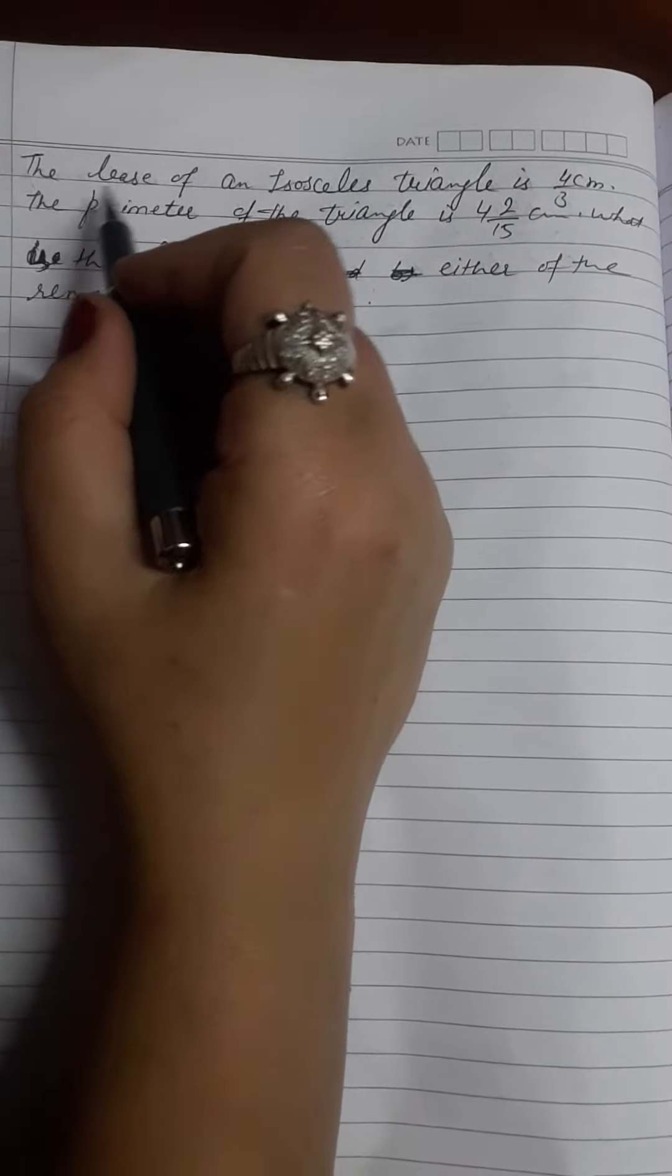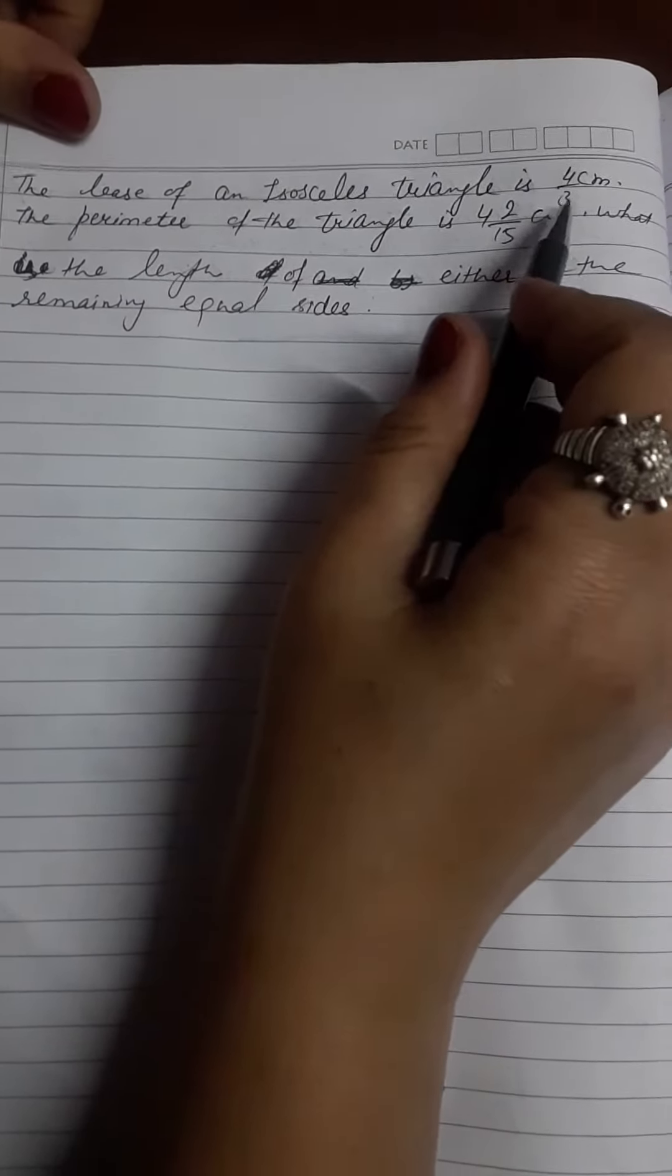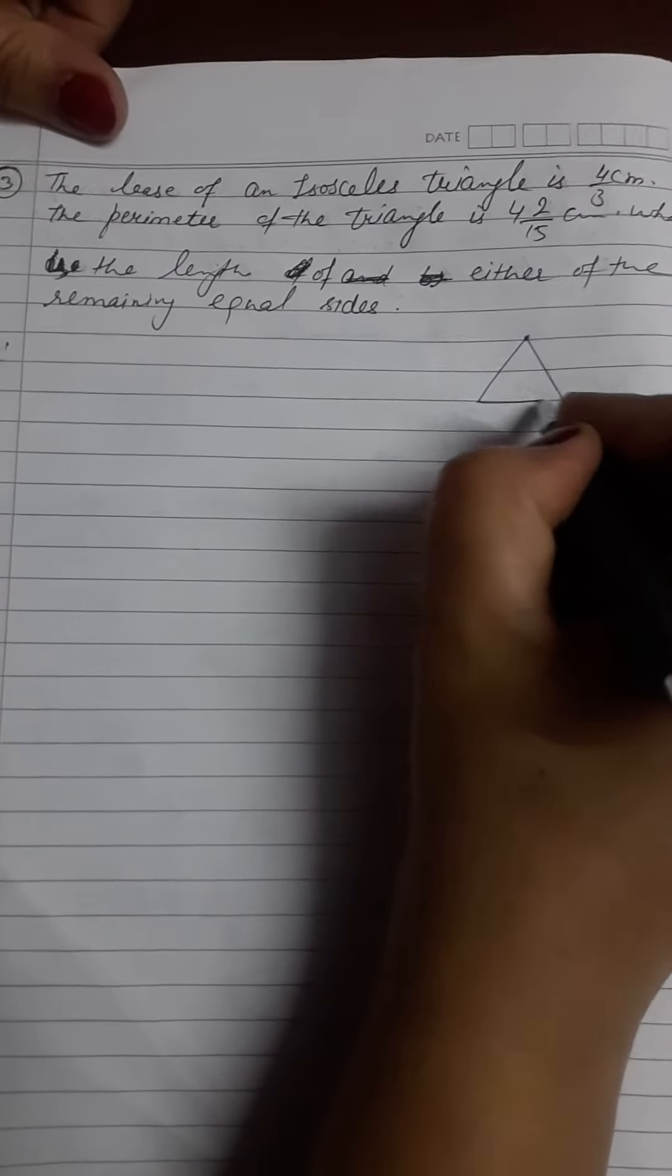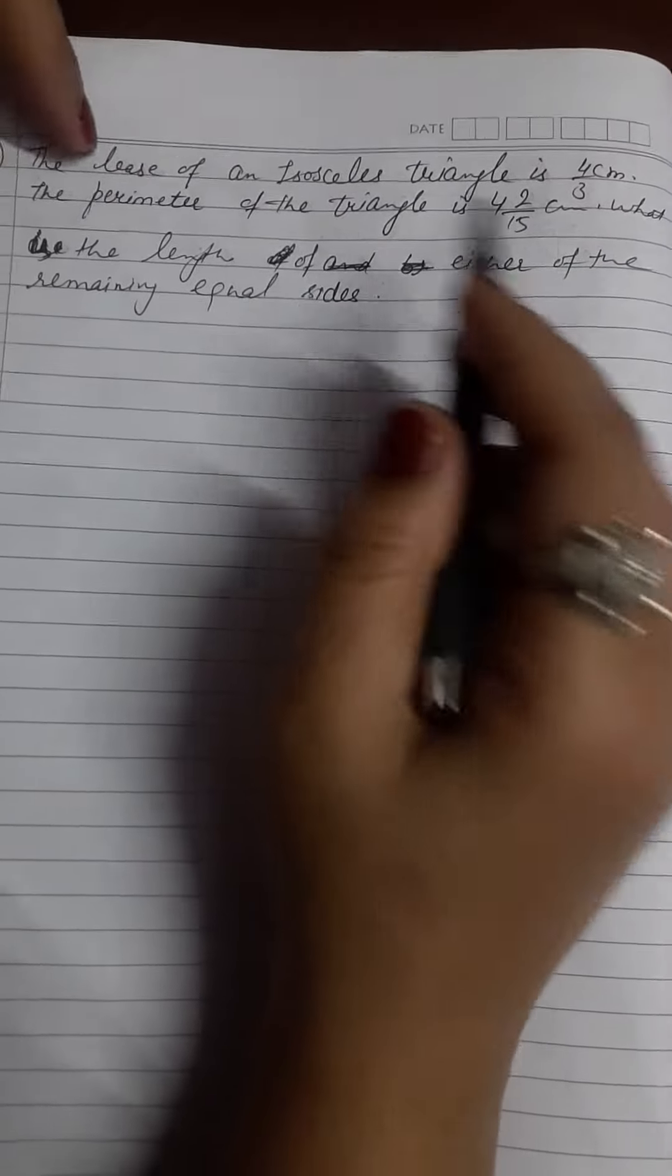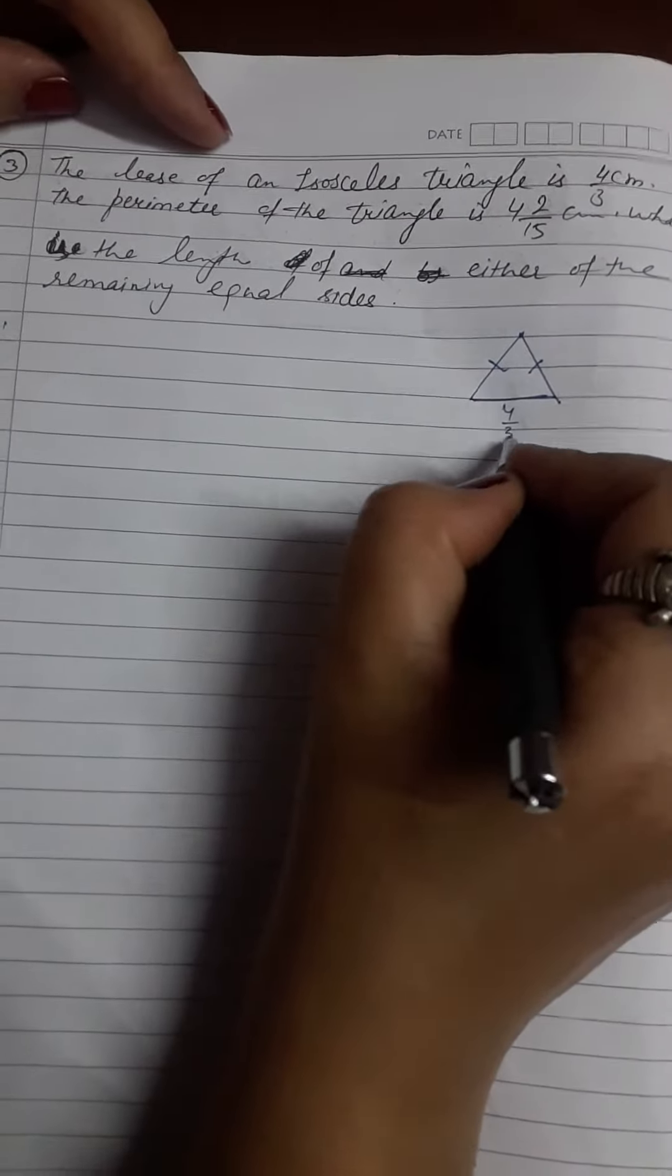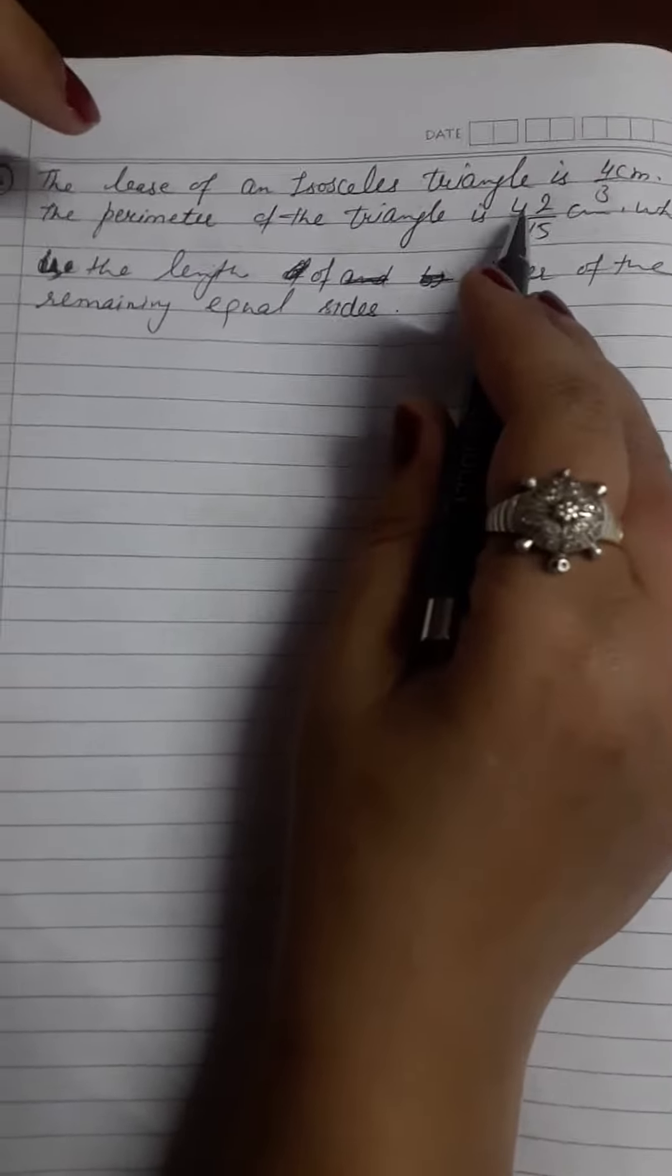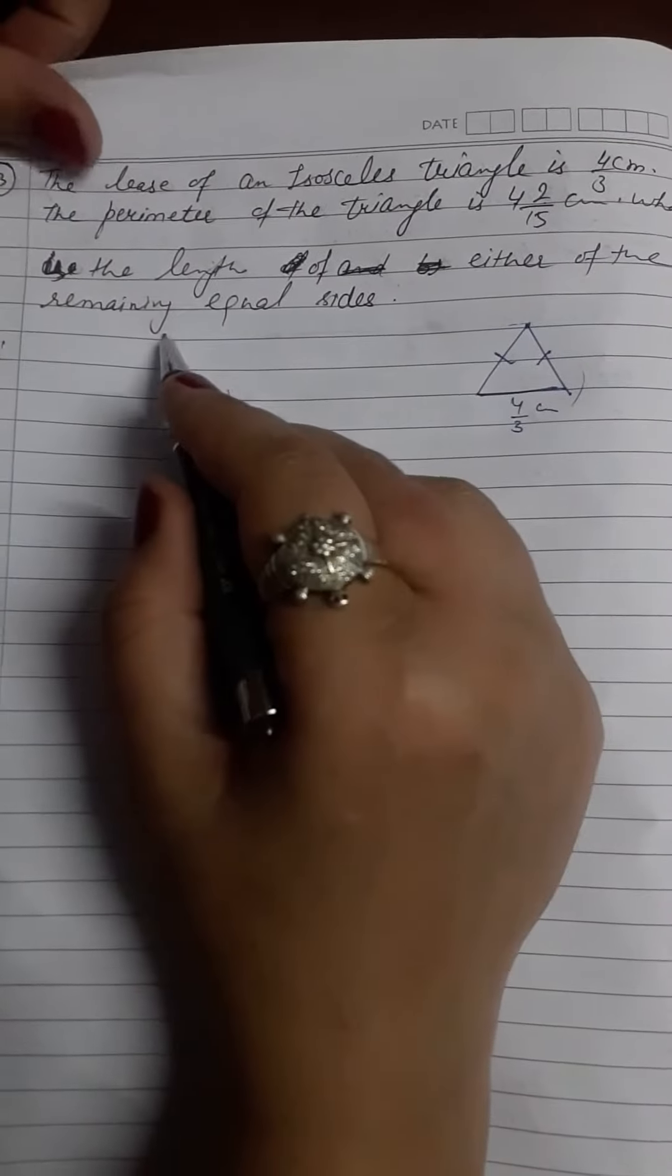Let's start our next question. The base of an isosceles triangle is 4 by 3 cm. An isosceles triangle has two sides equal and one is different. These two sides are equal and the base is different. We have given the base, that is 4 by 3 cm, and perimeter is sum of all sides. This is given as 4 and 2 by 15 cm. What is the length of either of the remaining equal sides?